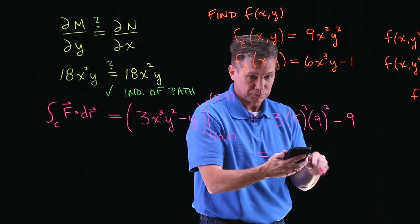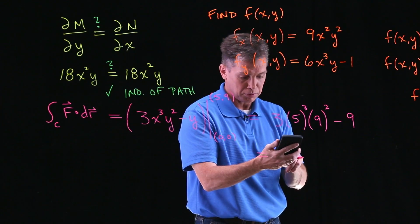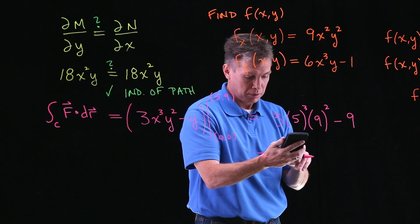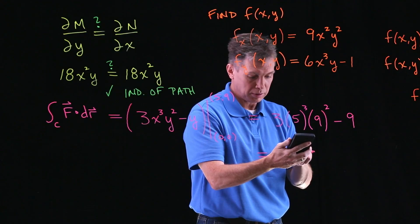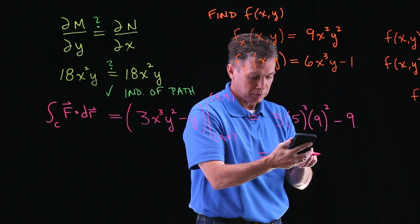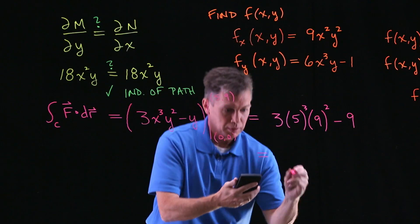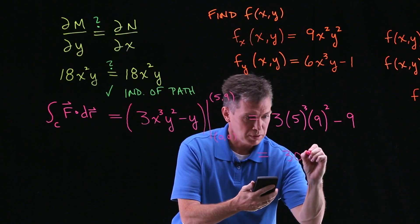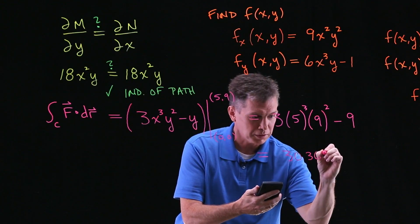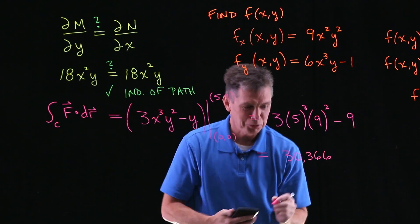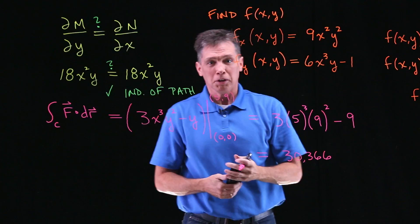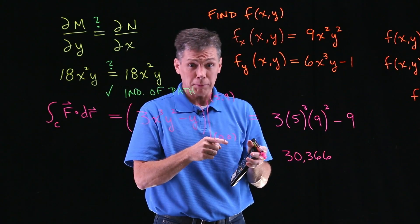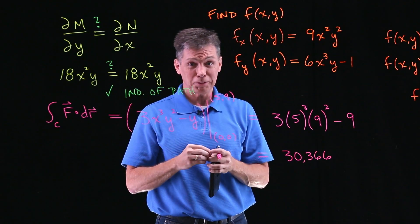And I'll just plug in 3 times the 5³ times the 9² and then minus 9 when I'm done, and I'm getting 30,366. See I told you I didn't want to do that without a calculator. All right, but that's our answer for this problem. Practice some more on your own and then...